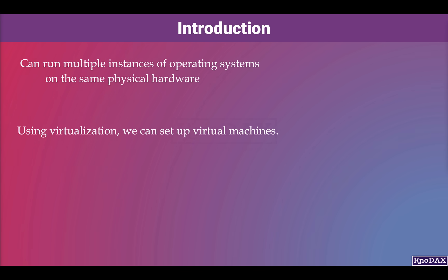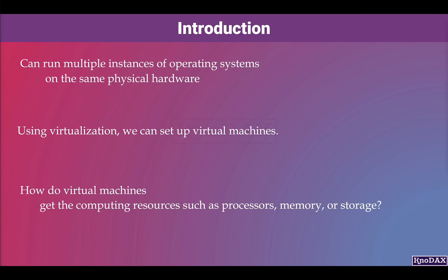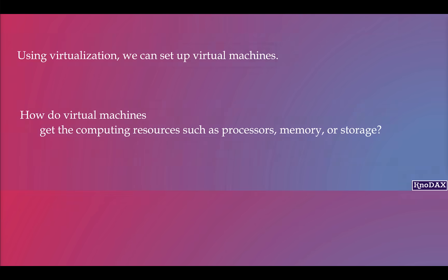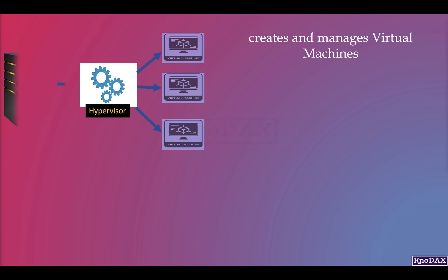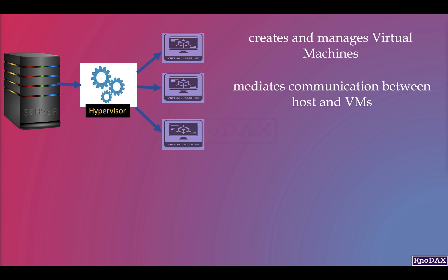Now the question is, how do virtual machines, as they run on the same physical hardware, get the computing resources such as processors, memory, or storage? The answer is hypervisor. The hypervisor creates and manages virtual machines, and it also mediates communication between the host and virtual machines.